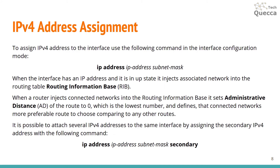IPv4 address assignment: to assign an IPv4 address to a router interface or routed switch port, use the following command in interface configuration mode: ip address [IP address] [subnet mask]. When the interface has an IP address and is in an up state, it injects the associated network into the routing table — the Routing Information Base. Connected networks are assigned an administrative distance of zero, the lowest value, making them the most preferred route. It is also possible to attach multiple IP addresses to the same interface by assigning a secondary IPv4 address using: ip address [IP address] [subnet mask] secondary.